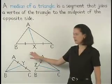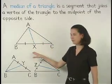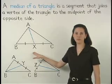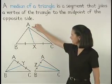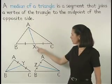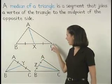in triangle ABC shown here, segment AX is a median of triangle ABC because one of its endpoints, A, is a vertex of the triangle, and its other endpoint, X, is the midpoint of the opposite side.